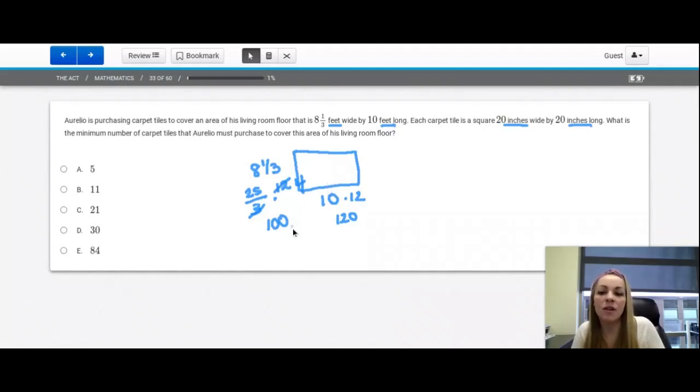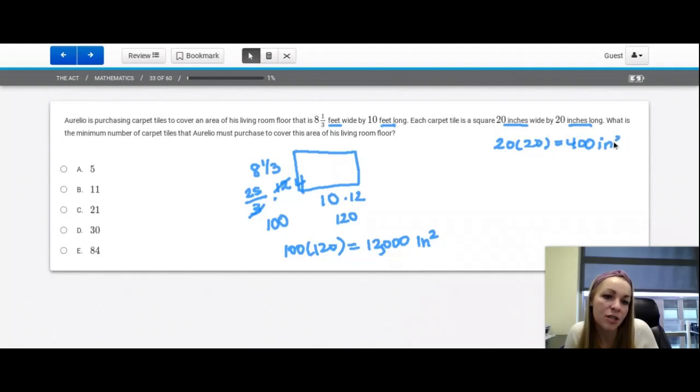To get the area of living room floor, it's 100 times 120, and that is 12,000 inches squared. So now we need to figure out how many of these fit within here. So each tile is 20 by 20. So 20 times 20, which is 400 inches squared. So I'm going to divide this into this 12,000 number. And when I divide 12,000 divided by 400, I get 30.